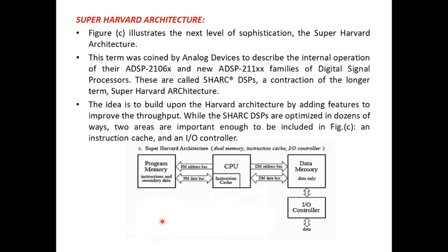A more advanced architecture over Harvard is the Super Harvard architecture, which comes with extra features such as instruction cache memory and an I/O controller. Cache is a memory concept used to speed up processing, and this instruction cache further increases speed. The term was coined by Analog Devices to describe the internal operation of the ADSP-210x6 series of digital signal processors, which are called SHARC DSPs — a contraction of 'Super Harvard Architecture'.